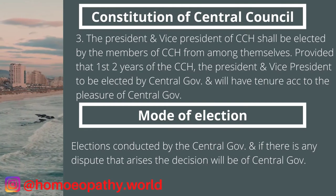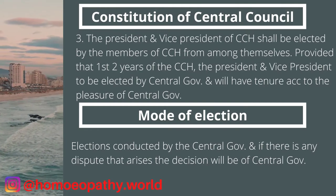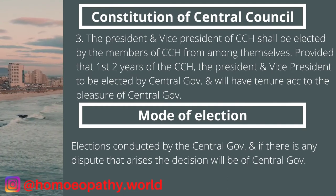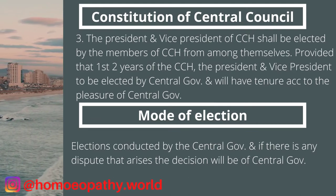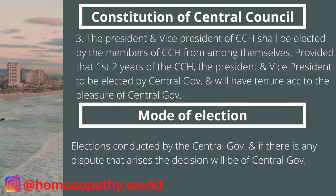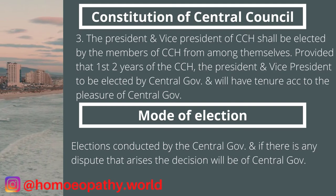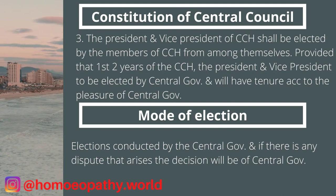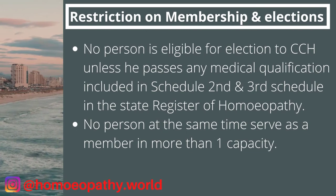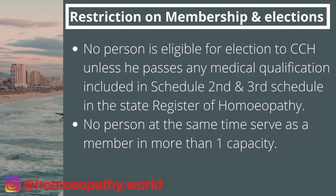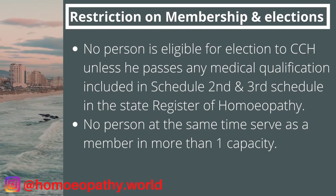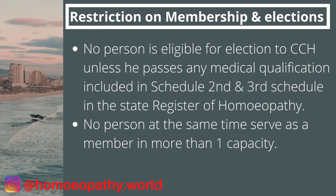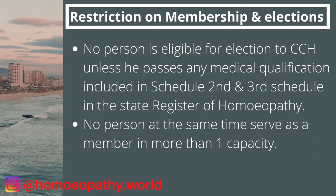For the first two years of the CCH, the president and vice president shall be elected by the central government and will have a tenure according to the pleasure of the central government. Regarding the mode of election: elections should be conducted by the central government, and if any dispute arises between competing members, the decision of the central government will be final. Regarding restrictions on election and membership: no person is eligible for election to the CCH unless they possess a medical qualification included in the second and third schedules and are in the state register of homeopathy. No person may at the same time serve as a member in more than one capacity.